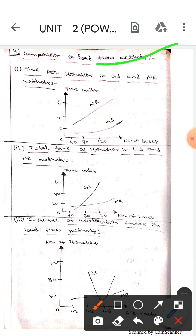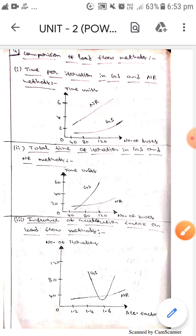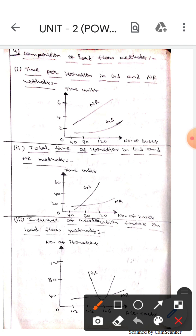So let's cut on topic. The first one is time per iteration in GS and NR methods. GS means Gauss-Seidel method, NR means Newton-Raphson method. Here this graph will, in the x-axis, take number of buses and the y-axis will take time units. The graph of NR will be like this whereas the graph of GS will be like this.